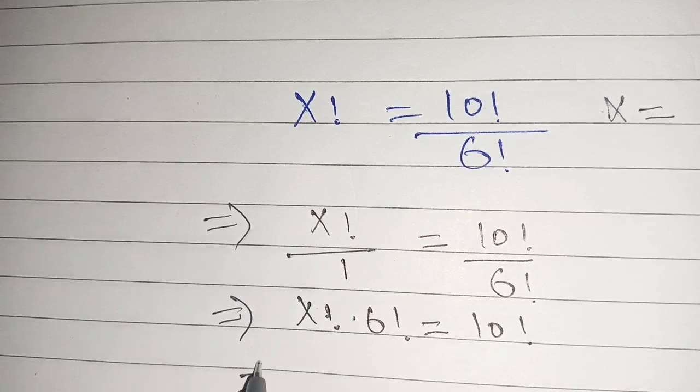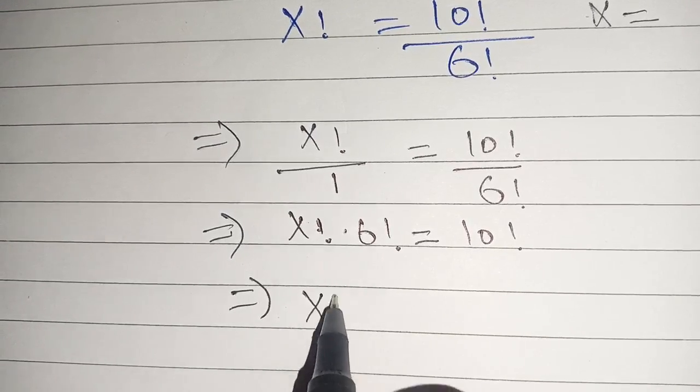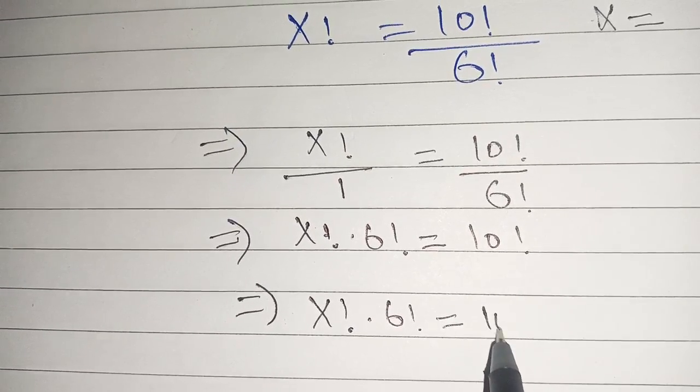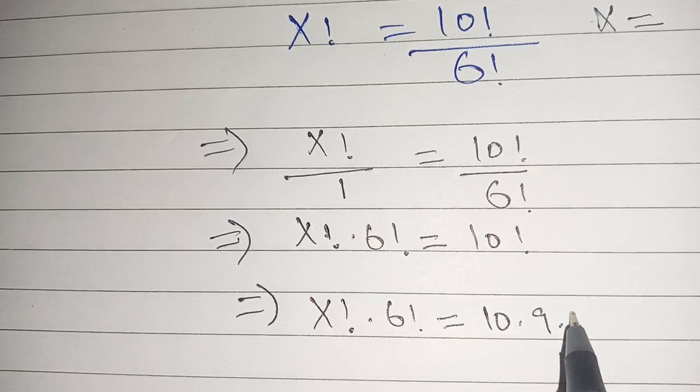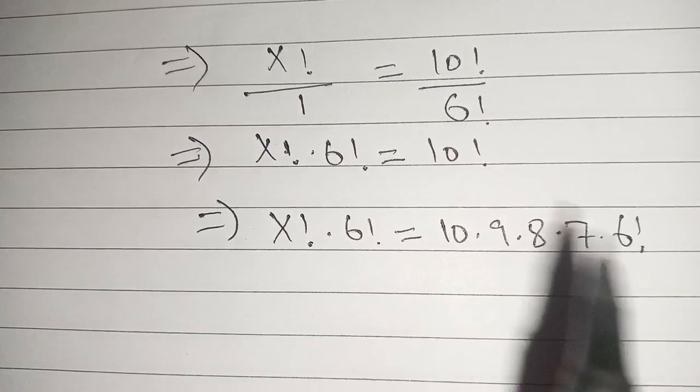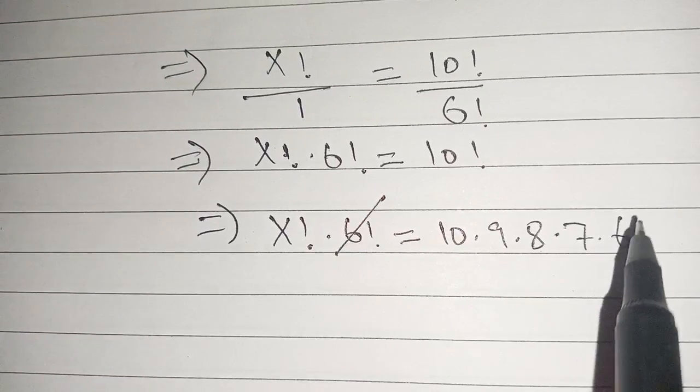Now in the next step we extend our 10 factorial and we get x factorial times 6 factorial is equal to 10 times 9 times 8 times 7 times 6 factorial. Now we can cancel out this 6 factorial by this 6 factorial.